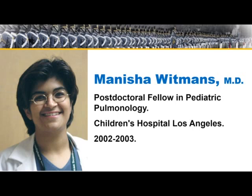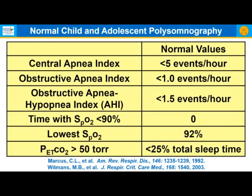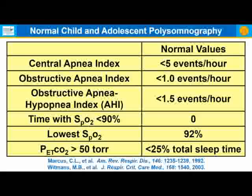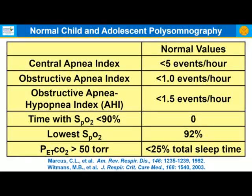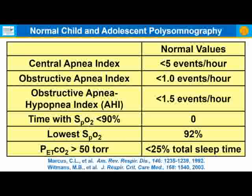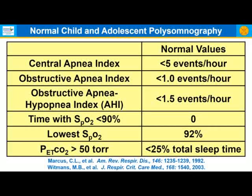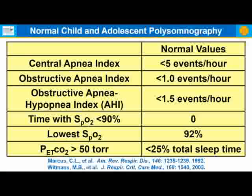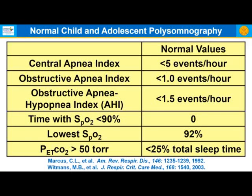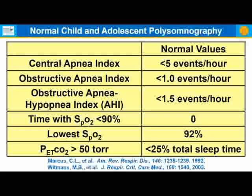Manisha Whitman, a postdoctoral fellow here in pediatric pulmonology from 2002 to 2003, fine-tuned these values, and her definition is what tends to stand today. For central apnea index, normal values are less than five events per hour. For obstructive apnea index, less than one event per hour; the obstructive apnea-hypopnea index is less than 1.5 events per hour. Time spent with arterial oxygen saturation less than 90% should be zero. Lowest saturation for normal values is 92% or greater.